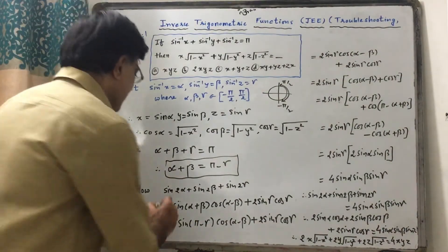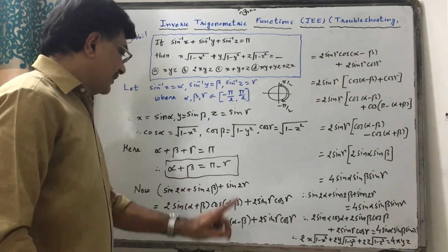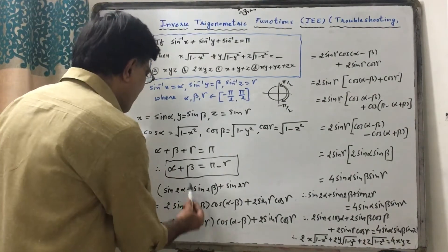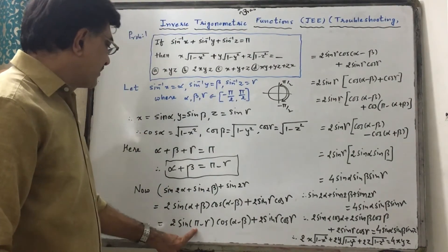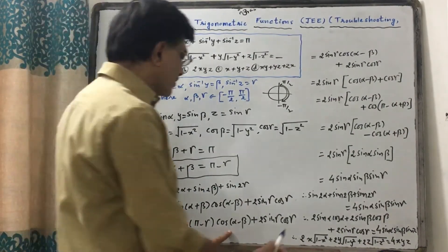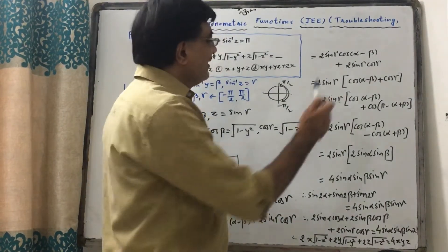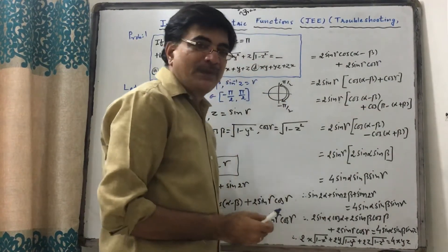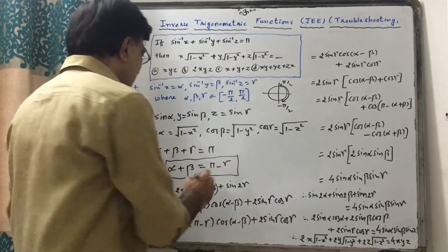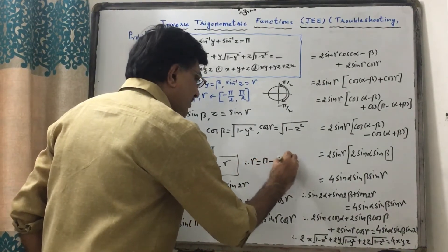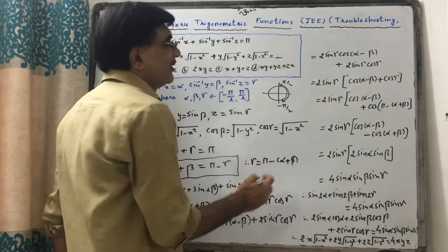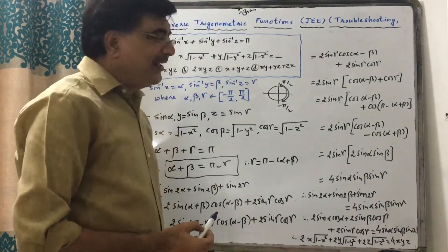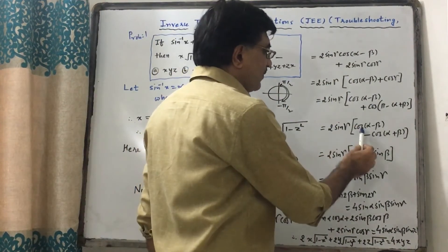This can be written as 2·sin(α + β)·cos(α − β) + 2sinγ·cosγ. Now α + β can be replaced by π − γ, so sin(π − γ) = sinγ. It becomes 2sinγ·cos(α − β) + 2sinγ·cosγ. Taking 2sinγ common, we get 2sinγ·[cos(α − β) + cosγ]. Now γ can be replaced as π − (α + β).